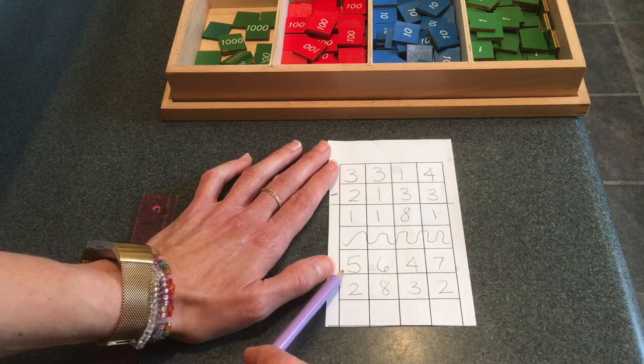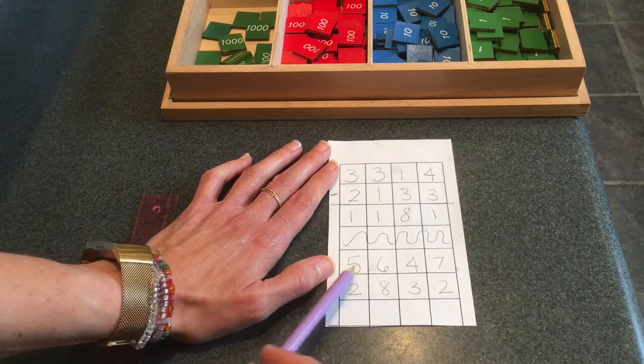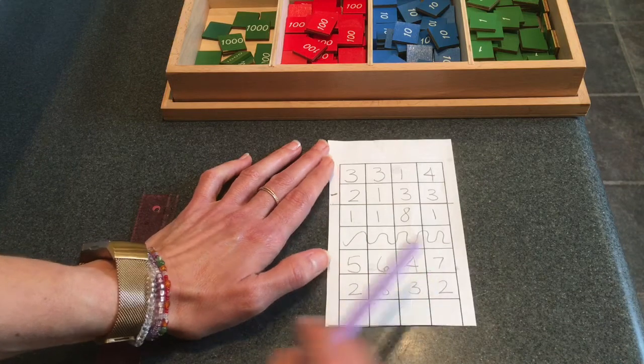So again, you're going to build five thousand, six hundred, four tens, and seven units.